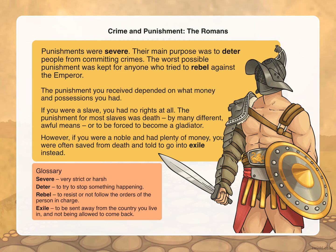Punishments in Roman times were severe. Their main purpose was to deter people from committing crimes — to put them off. The worst possible punishment was kept for anyone who tried to rebel against the emperor. The punishment you received depended on what money and possessions you had. If you were a slave you had no rights at all — the punishment for most slaves was death by many different awful means, or to be forced to become a gladiator. However, if you were a noble with plenty of money, you were often saved from death and told to go into exile instead. Do you think it's fair that punishment changed depending on how wealthy a person was?